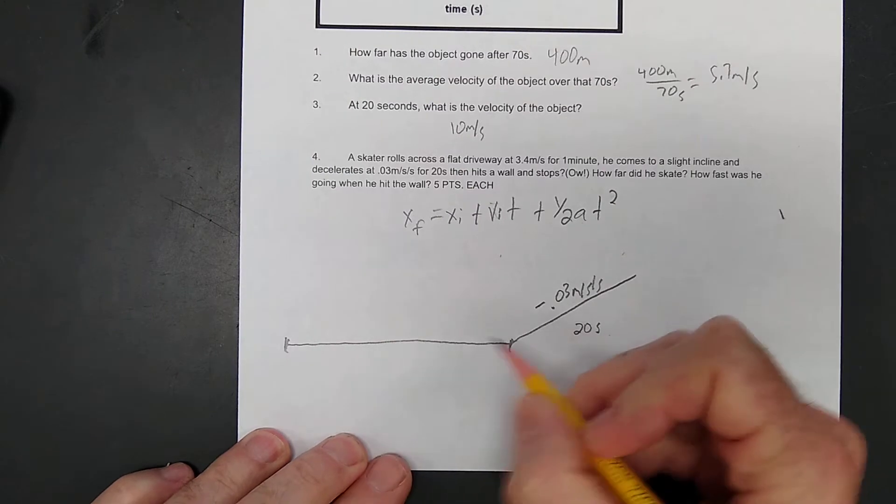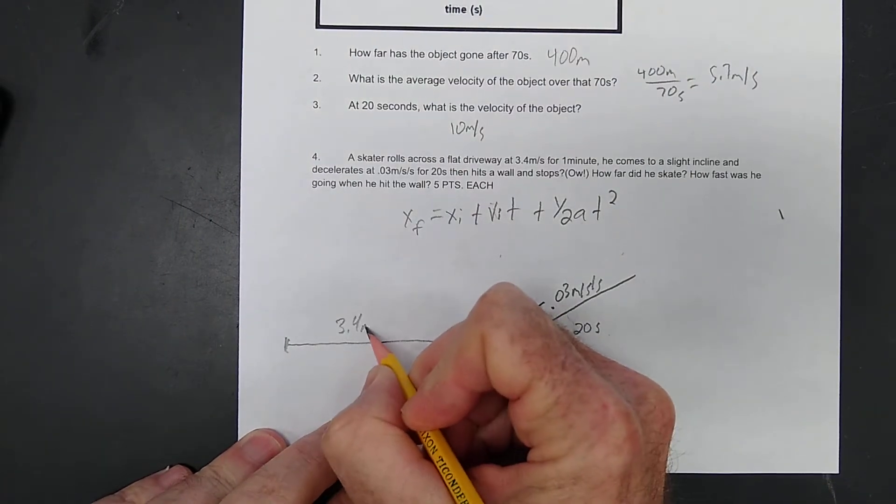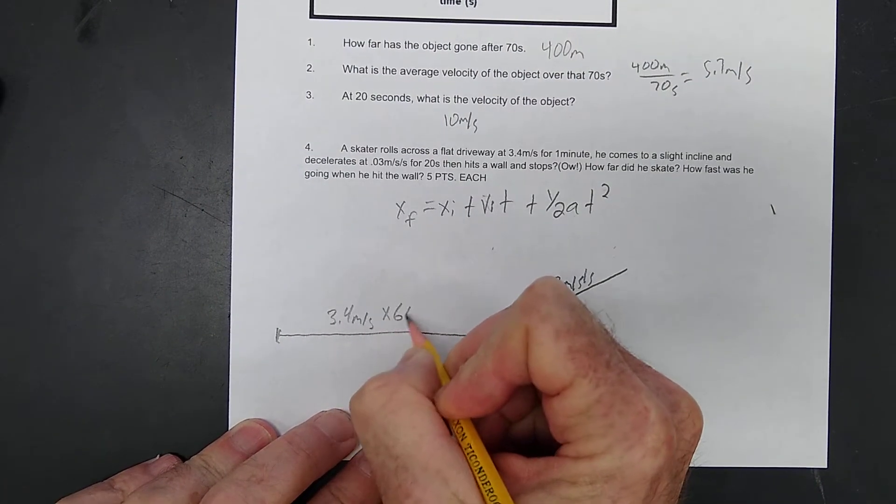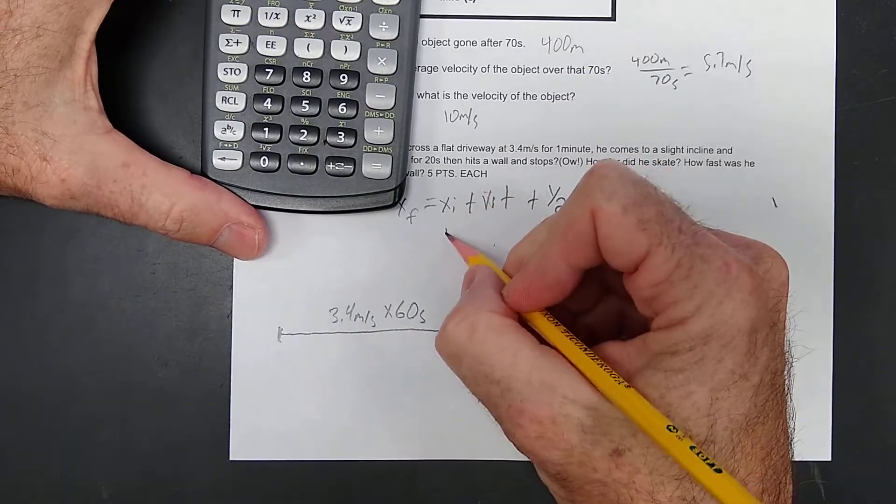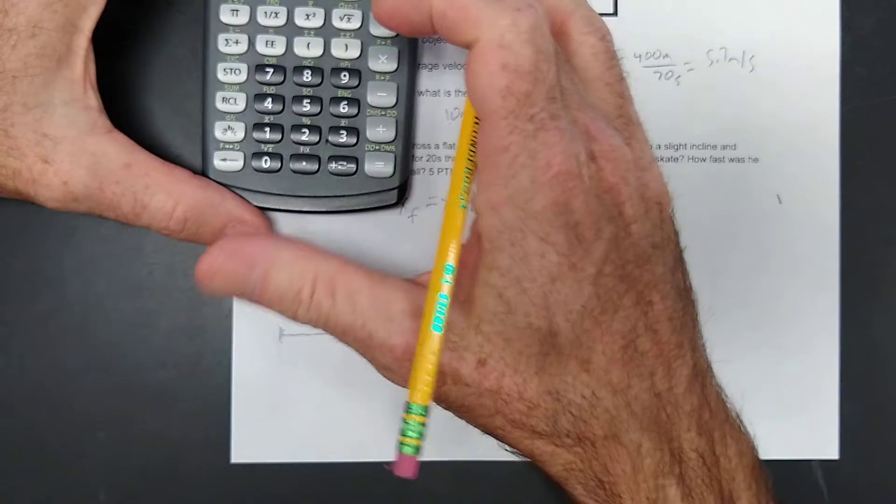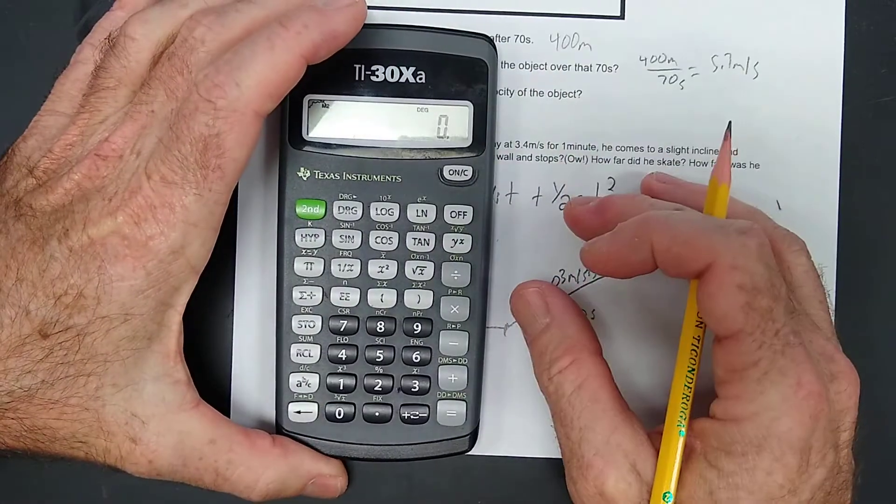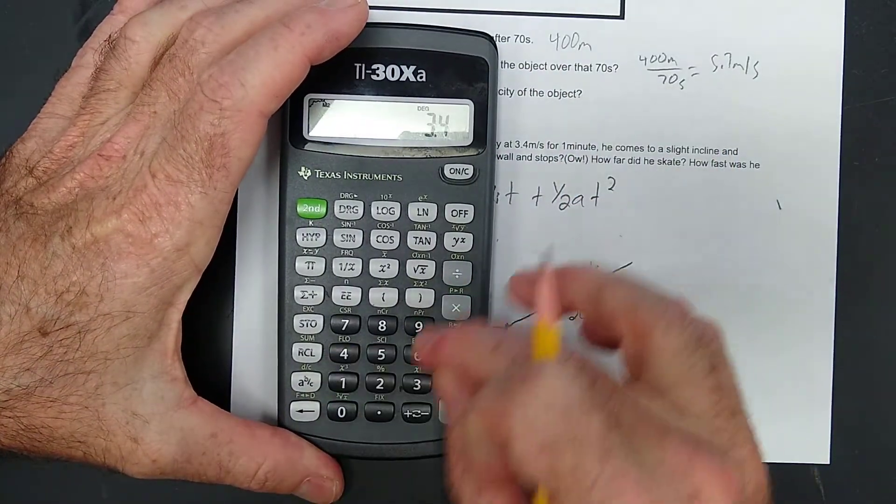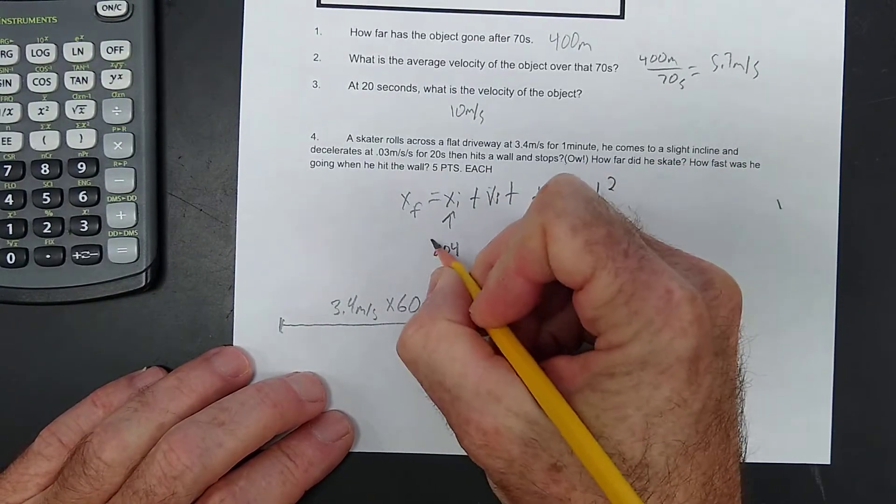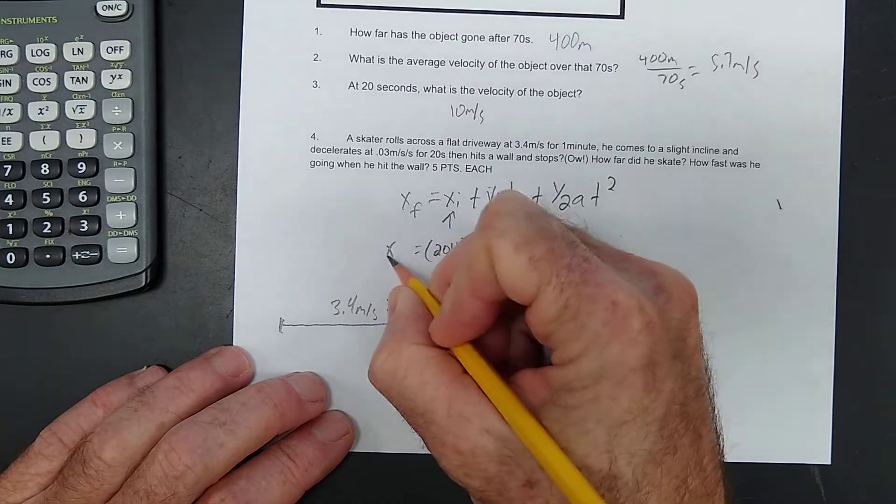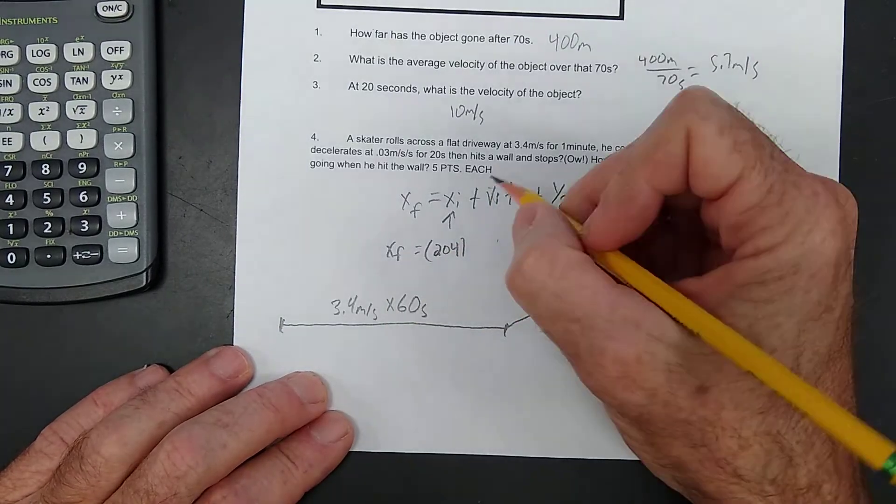He does that for 20 seconds. Before that, he goes an initial distance, 3.4 meters per second for 60 seconds. So, let's find out the initial distance is this right here, okay? So, we're talking about 3.4 times 60. 204 is the initial distance. That's before he gets here.